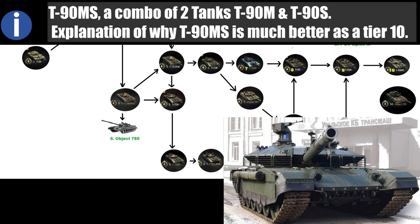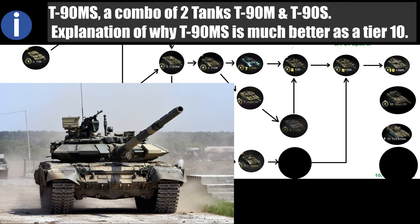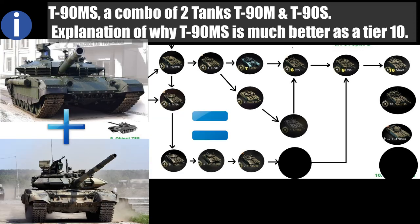Now T-90S, it is the export version. It was made by Uralvagonzavod and were updated with 1000 horsepower engines made by Chelyabinsk Tractor Plant. These tanks carry a liner version of the Shtora-1 passive-active protection system, which lacks the infrared dazzler carried on the turret. Combining both T-90M and T-90S, we have T-90MS.